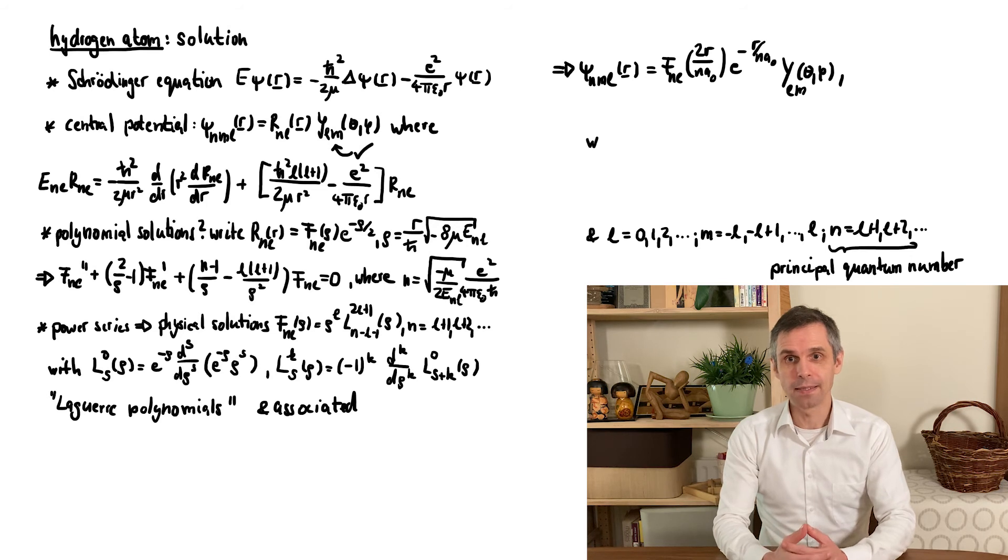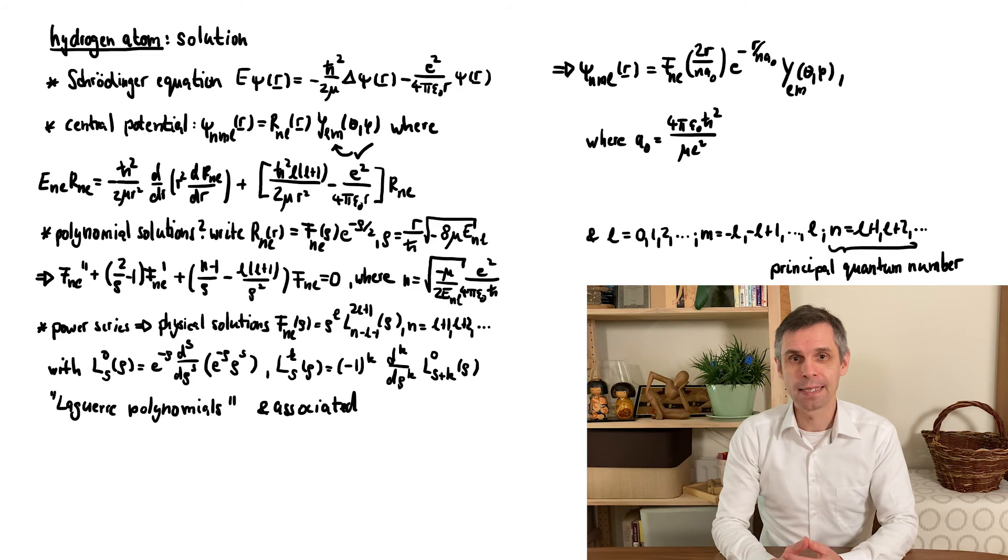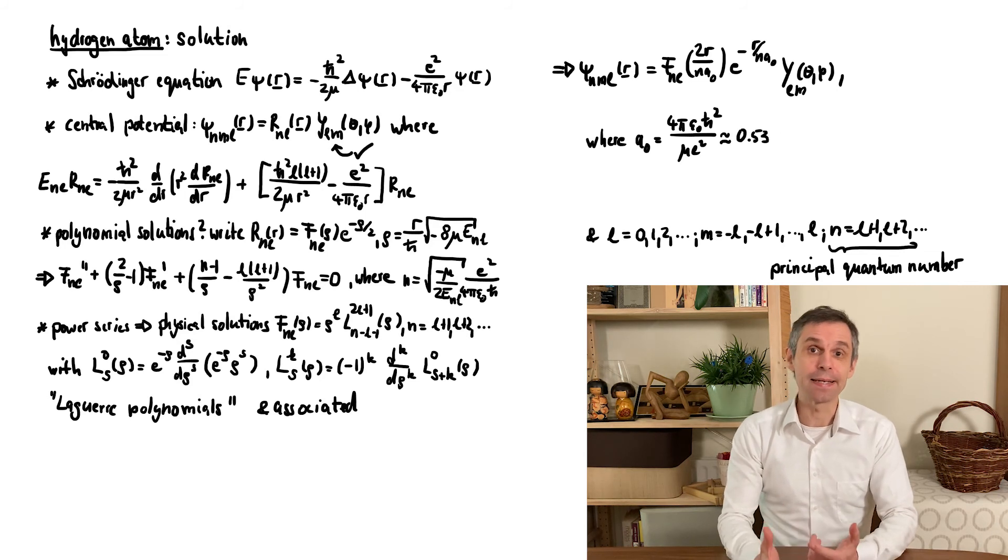The radial dependence involves a natural length scale a₀, which is known as the Bohr radius and gives you an idea of the size of the atom.